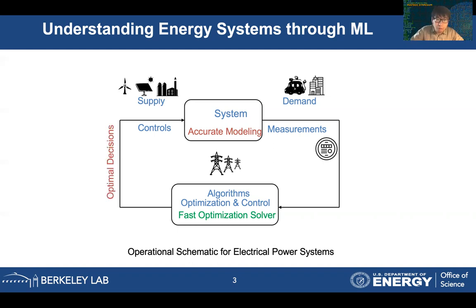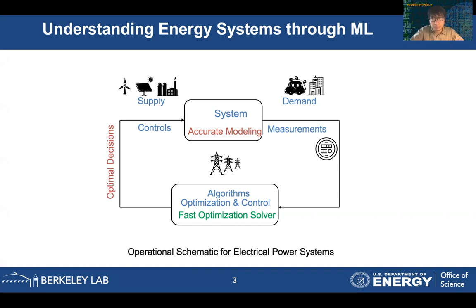For our current research in machine learning, people are really interested to see if we can automate this process — from collecting all the data, doing data processing, to giving a robust and reliable decision-making algorithm, such as dispatching power or getting good scheduling for different renewable generations, so that such systems can be stable and supply and demand side will be balanced at all times.